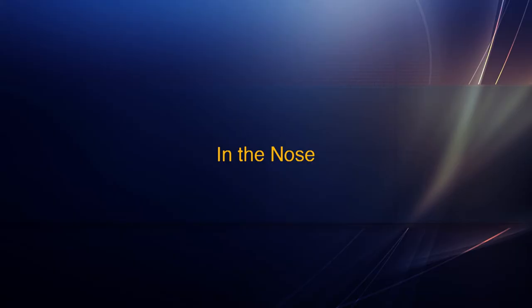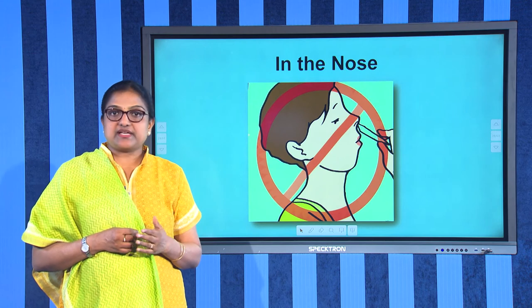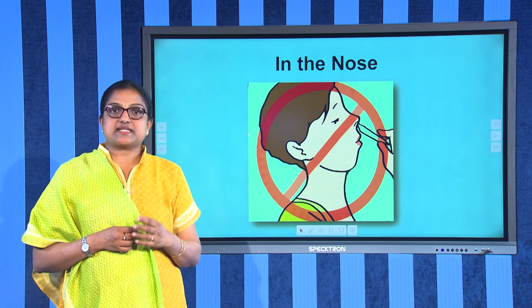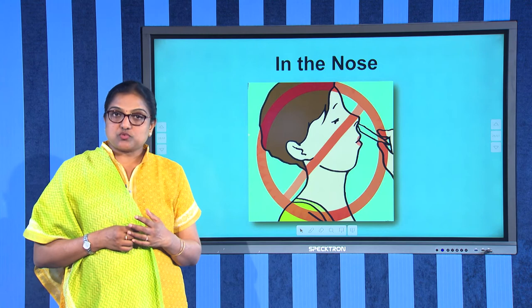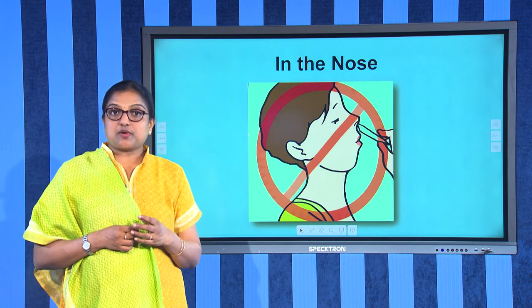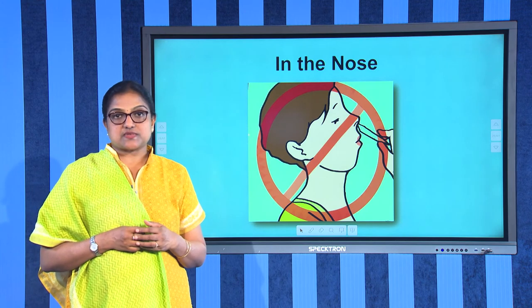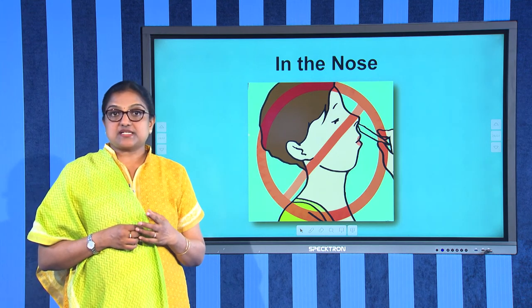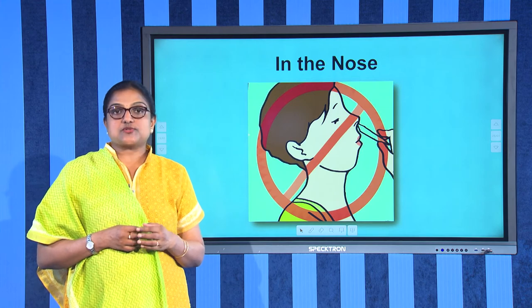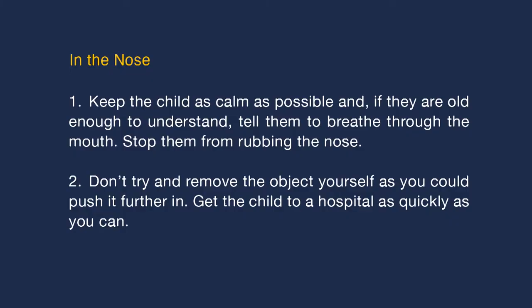In the nose: this is most likely to happen with very young children who often try putting things such as beads, pebbles, or marbles up their noses. If the object is smooth it may become stuck, but a sharp object can damage the delicate tissues. Your child may have a swollen nose, difficulty breathing through the nose, and there may be a discharge. Keep the child calm and tell them to breathe through the mouth. Stop them from rubbing the nose and don't try to remove the object yourself.